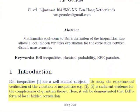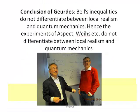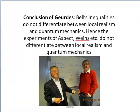Looking at the first paragraph: to many, the experimental verification of the violation of inequalities is sufficient evidence for completeness of quantum theory. Here it will be demonstrated that Bell's form of local hidden correlation can be transformed to violate Bell's inequalities. We can conclude from Gerd's paper that Bell's inequalities do not differentiate between local realism and quantum mechanics. Hence, the experiments of Aspect, Zeilinger, and others do not differentiate either.